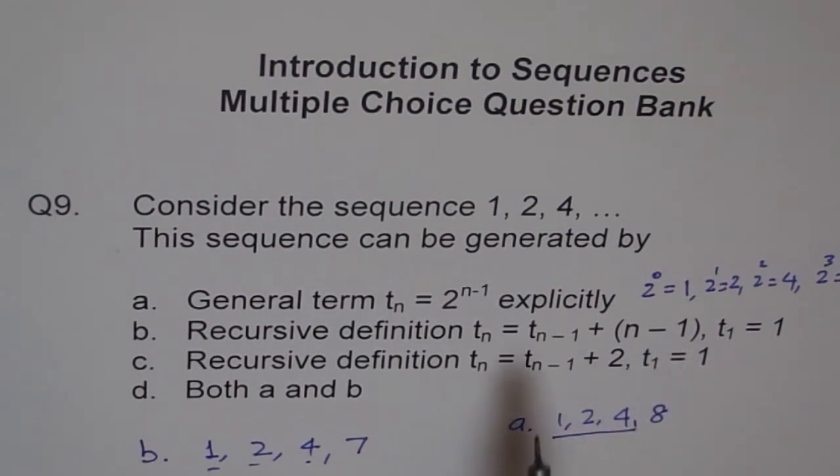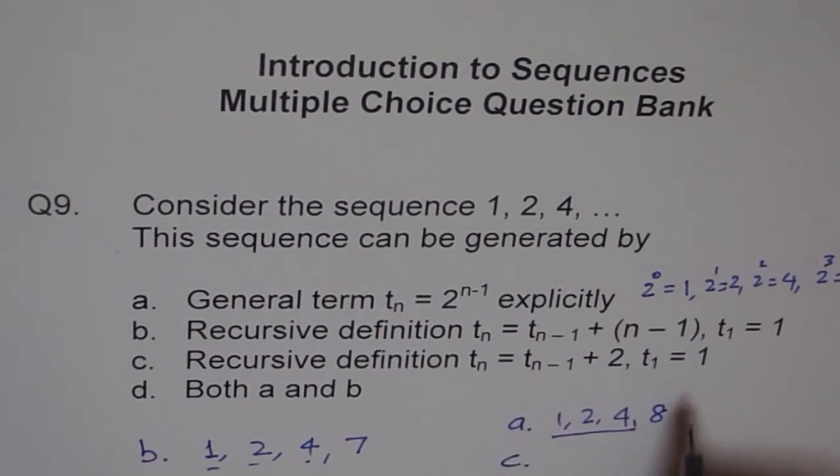Now option C. Let's try to generate from option C. T_1 is 1. If I put 2 here, then T_2, n minus 1 is the previous term, 1 plus 2 is 3, not 2. So it does not represent the given sequence.